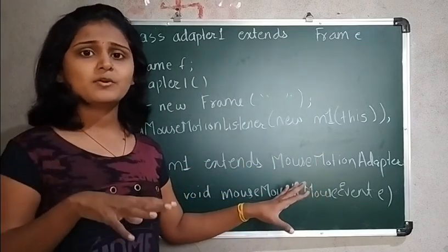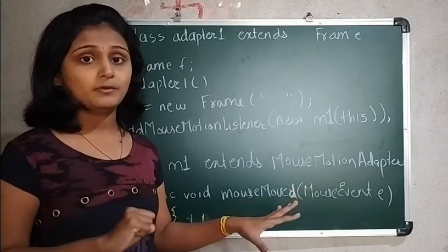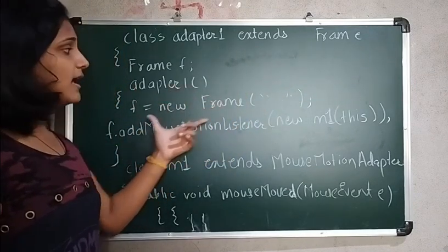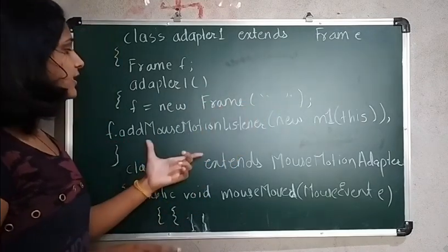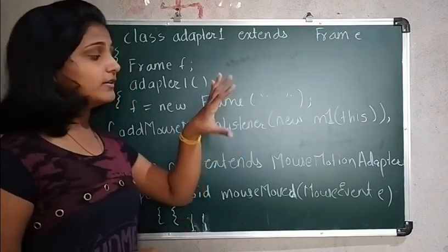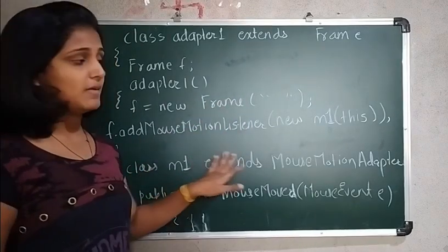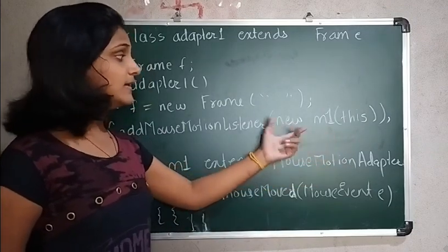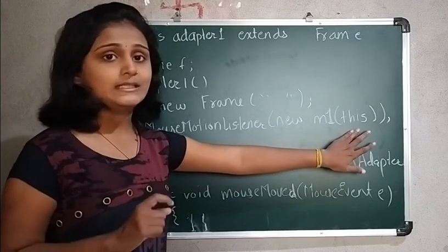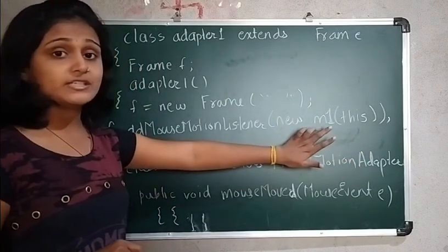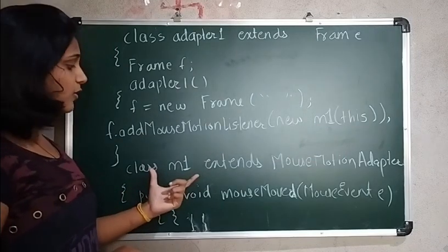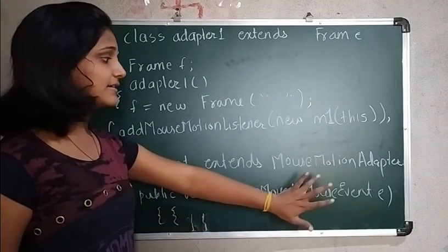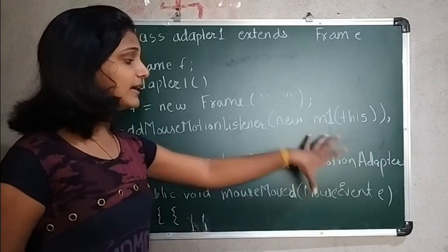As per the component being used and what event handling we want to perform — here I have created one class AdapterOne which extends Frame. I created its constructor and one object of the Frame. I wanted to perform action on the Frame, so I used f.addMouseMotionListener for registration. The parameter here is the main point: I passed new M1(), where M1 is defined below as a class that extends MouseMotionAdapter.